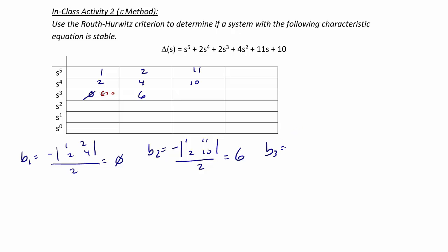b3 is going to be negative 1 times 0 minus 2 times 0, divided by 2, which equals 0.